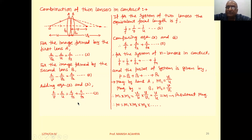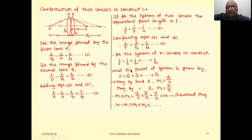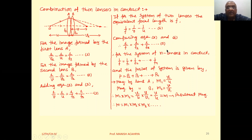Now suppose the equivalent focal length of the system of these two lenses is f. Here u is the object distance and v is the final image distance, so we can write 1/f = 1/v − 1/u. Adding Equations 3 and 4, we get 1/f = 1/f1 + 1/f2. This implies that for a system of n lenses in contact: 1/f = 1/f1 + 1/f2 + ... + 1/fn.